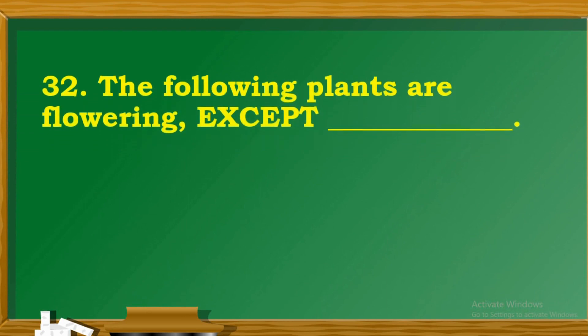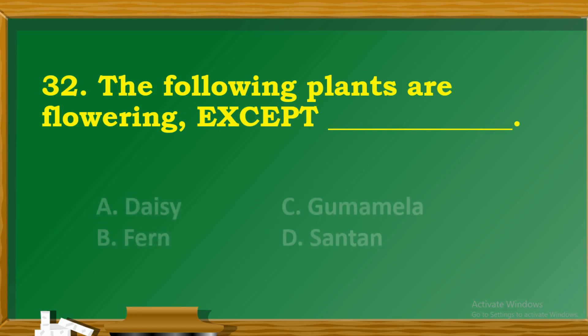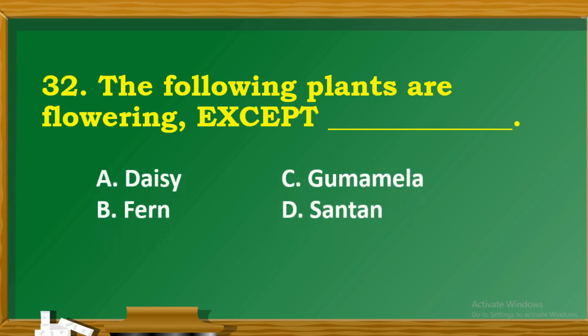Question 32: The following plants are flowering except... A. Daisy. B. Fern. C. Gumamela. D. Santan.